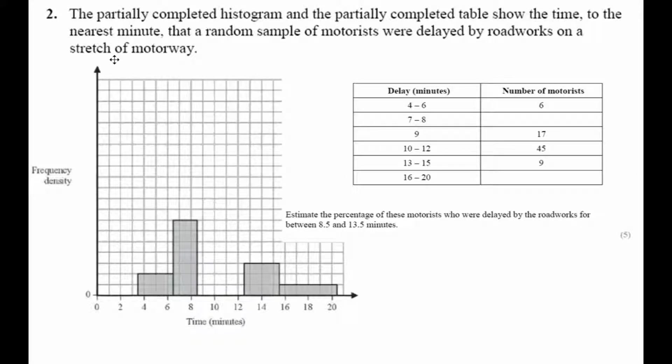Question 2: the partially completed histogram and the partially completed table show the time to the nearest minute that a random sample of motorists were delayed by roadworks on a stretch of motorway.